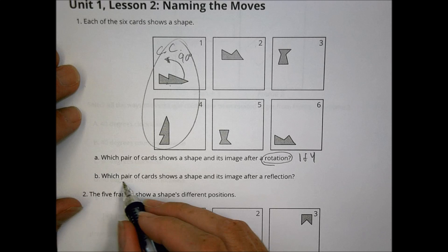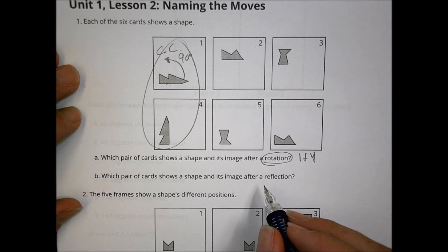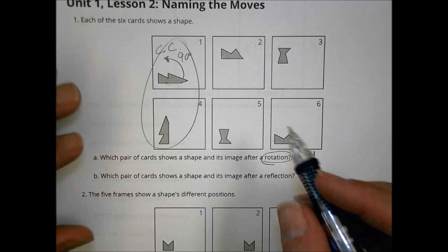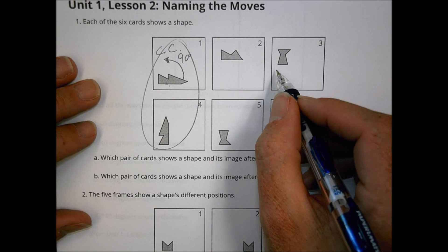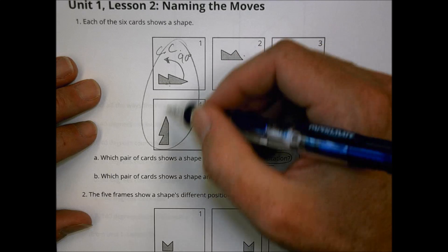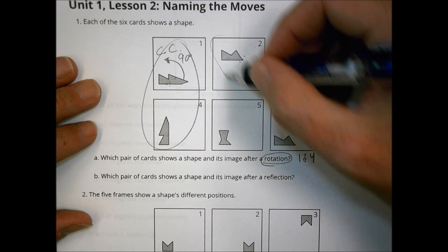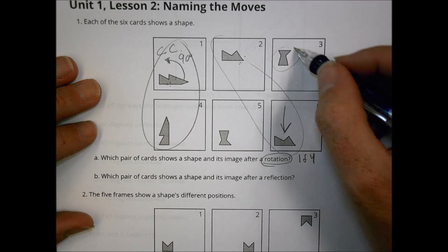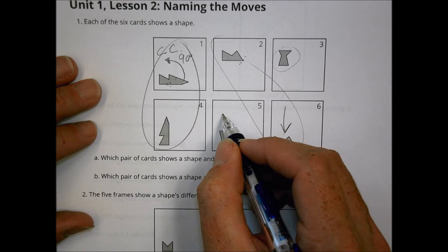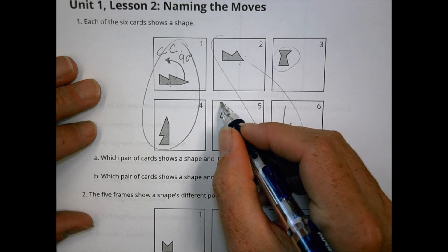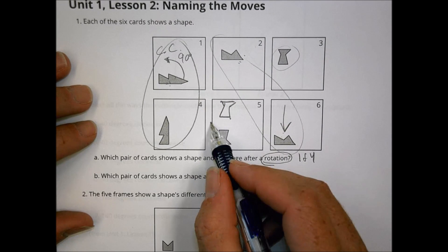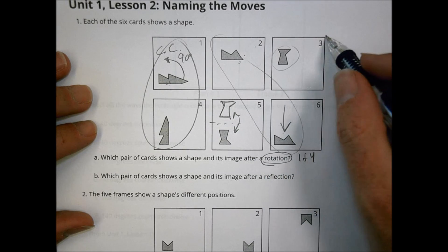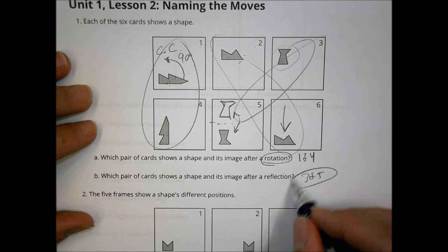Part B asks which pair shows a shape and its image after a reflection. Remember, in a reflection, corresponding parts are on opposite sides of the line of symmetry. Looking at the cards, one pair is just a slide downward — that's not a reflection. I'm left with two cards, and drawing them out we can see it's basically a reflection from one to the other. So the reflection pair is cards three and five.